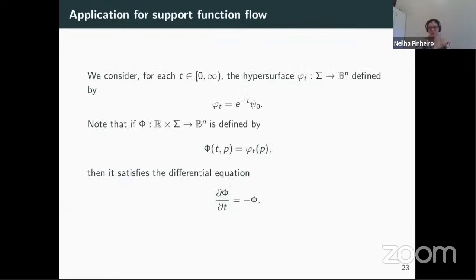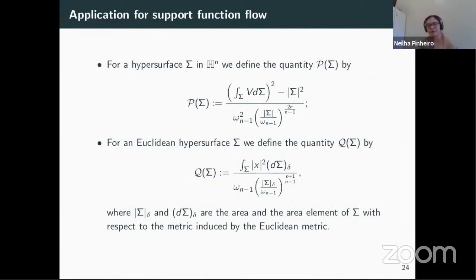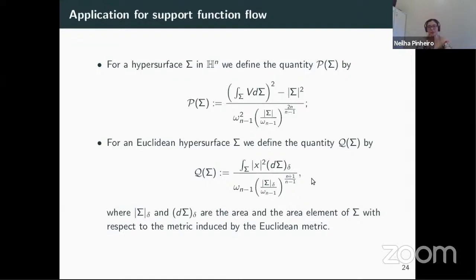Now I will define two quantities. The first one: for a hypersurface sigma in hyperbolic space, we define the quantity P(sigma) by this expression. For a Euclidean hypersurface sigma, we define the quantity Q(sigma) by this expression, where the norm of sigma_delta and d sigma_delta are the area and the area element of sigma with respect to the metric induced by the Euclidean metric. I want you to pay attention to these two quantities because the relation between them will be very important to show some results in our work.